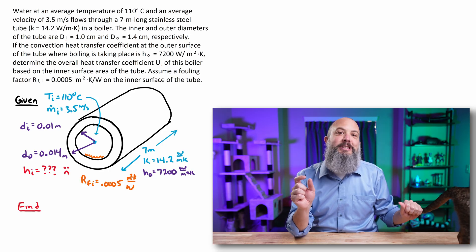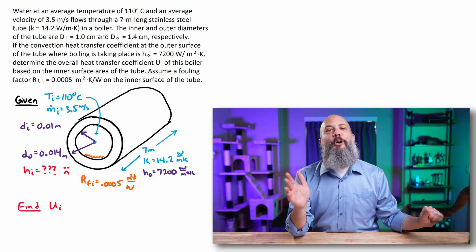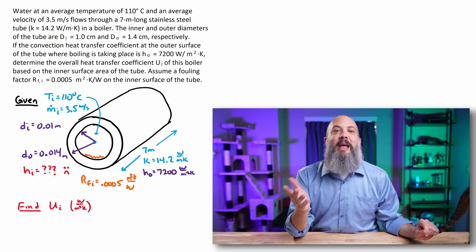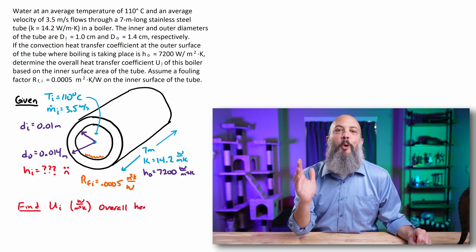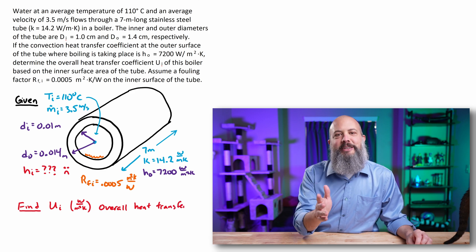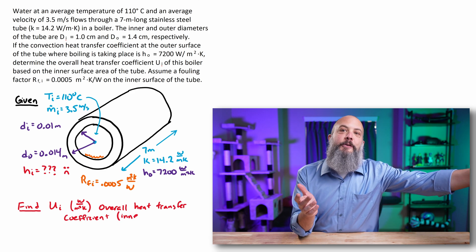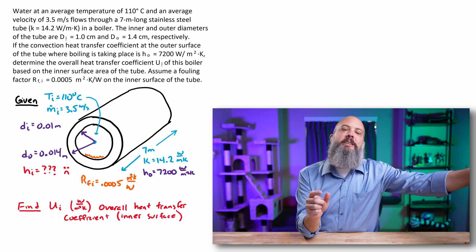Write out what you're trying to find, including the variable you're going to use. In this case, U, the overall heat transfer coefficient, the brief description of that item, and the units you're going to use for it, watts per meter squared Kelvin.